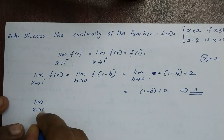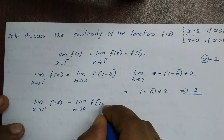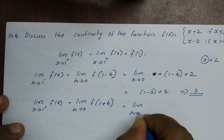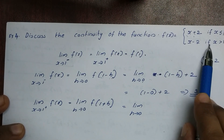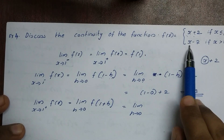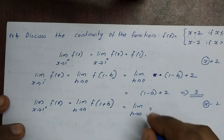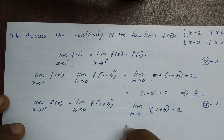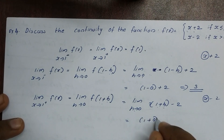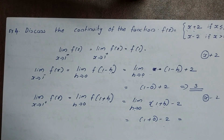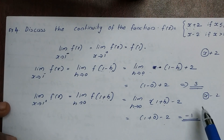Now, limit x tends to 1 plus of f(x) equals limit h tends to 0 of f(1+h). Since x = 1+h is greater than 1, we use x-2. So (1+h)-2, and as h tends to 0, this equals 1+0-2 = -1. So the right-hand limit is -1.